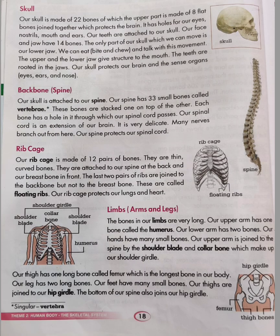Let's move ahead to read about the skull. A skull is made of 22 bones, of which the upper part is made of 8 flat bones joined together which protect the brain. It has holes for our eyes, nostrils, mouth and ears. Our teeth are attached to our skull. Our face and jaw have 14 bones. The only part of our skull which we can move is our lower jaw.